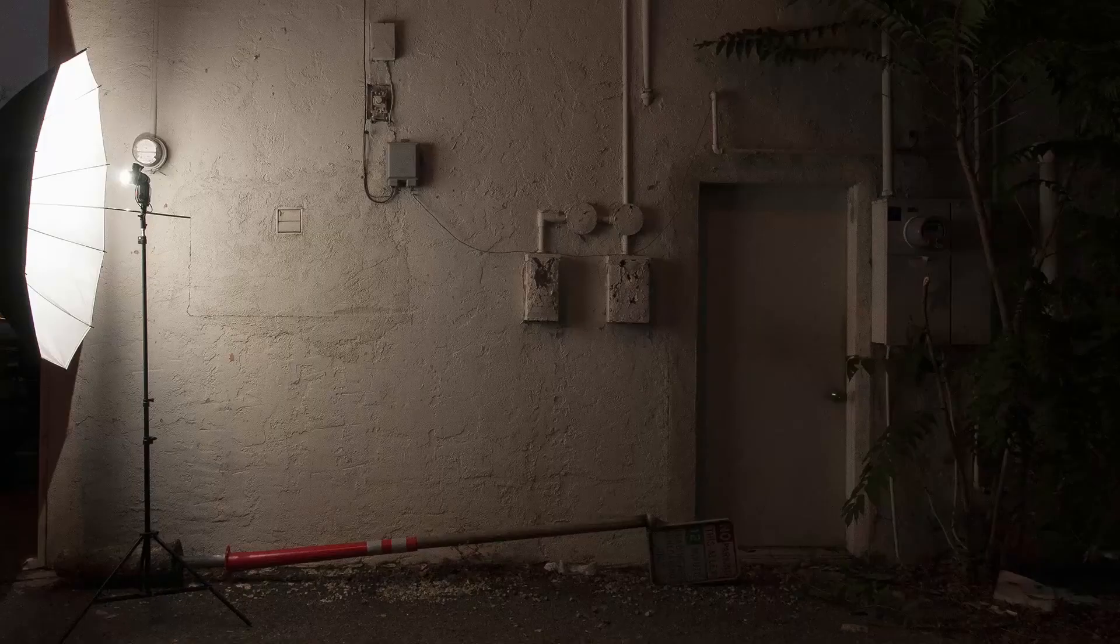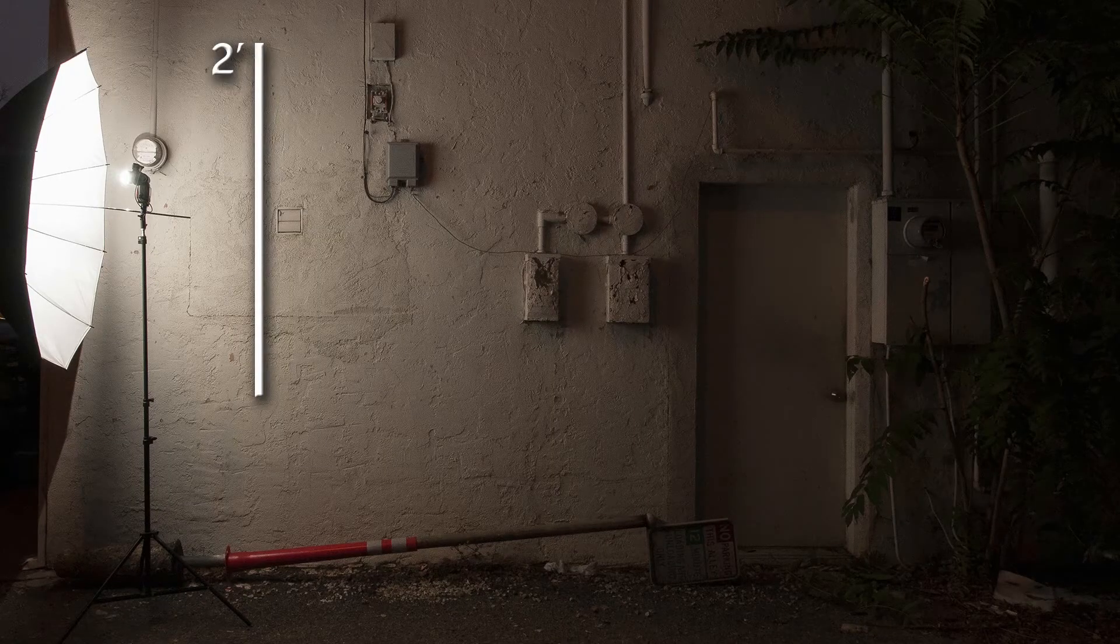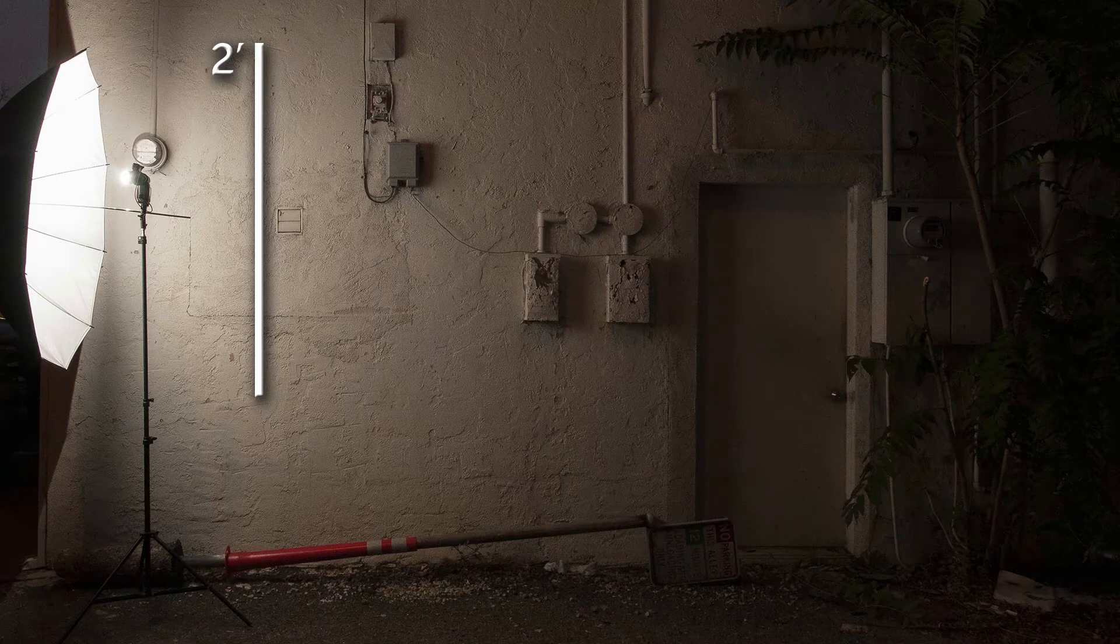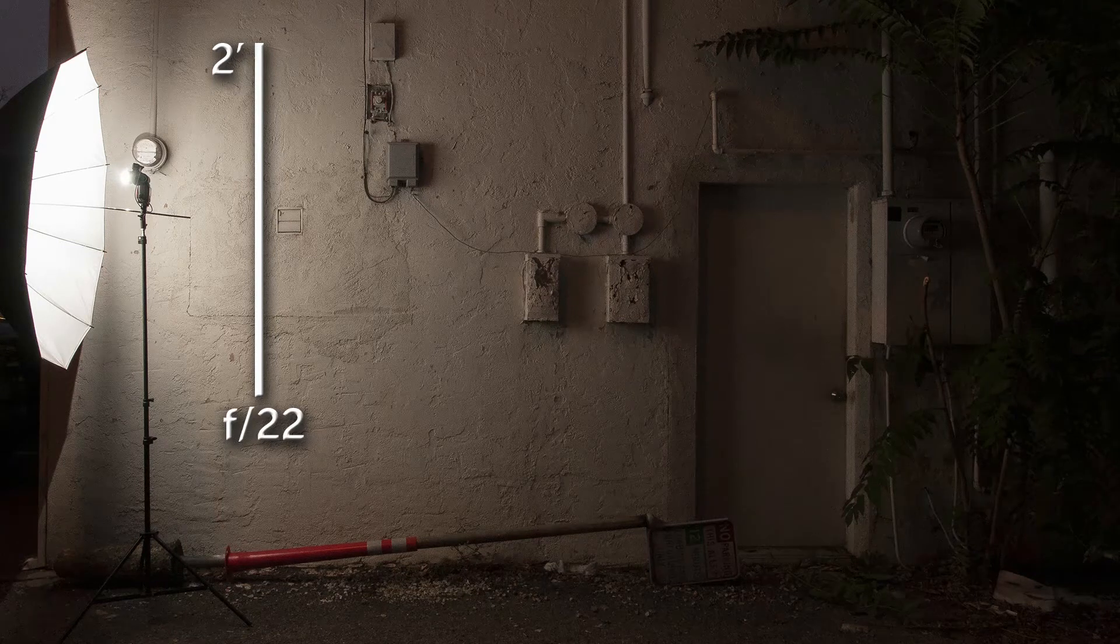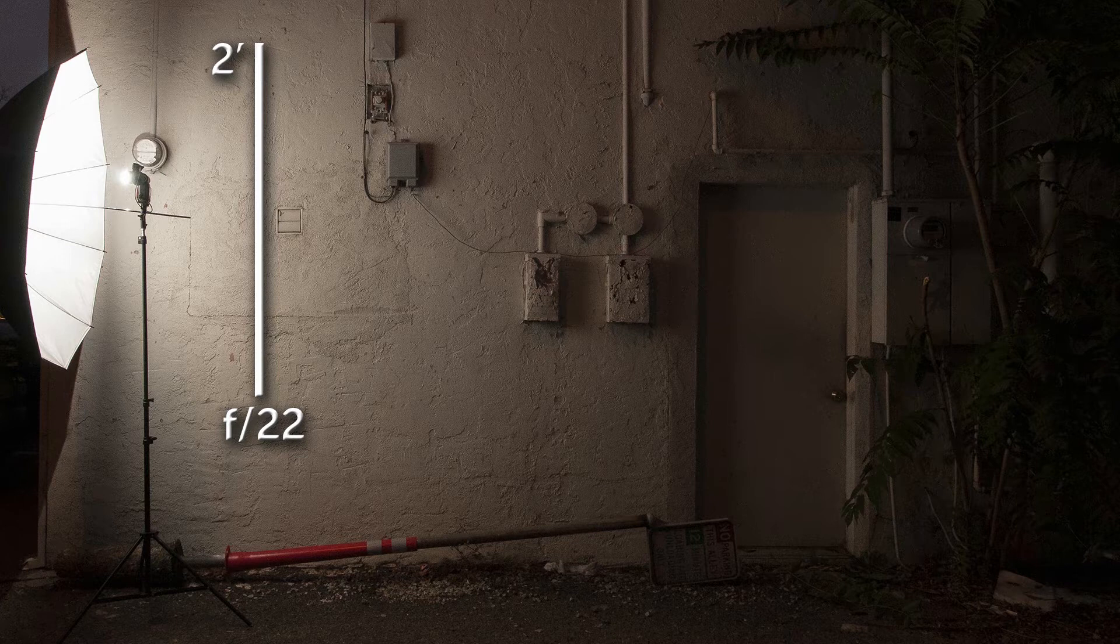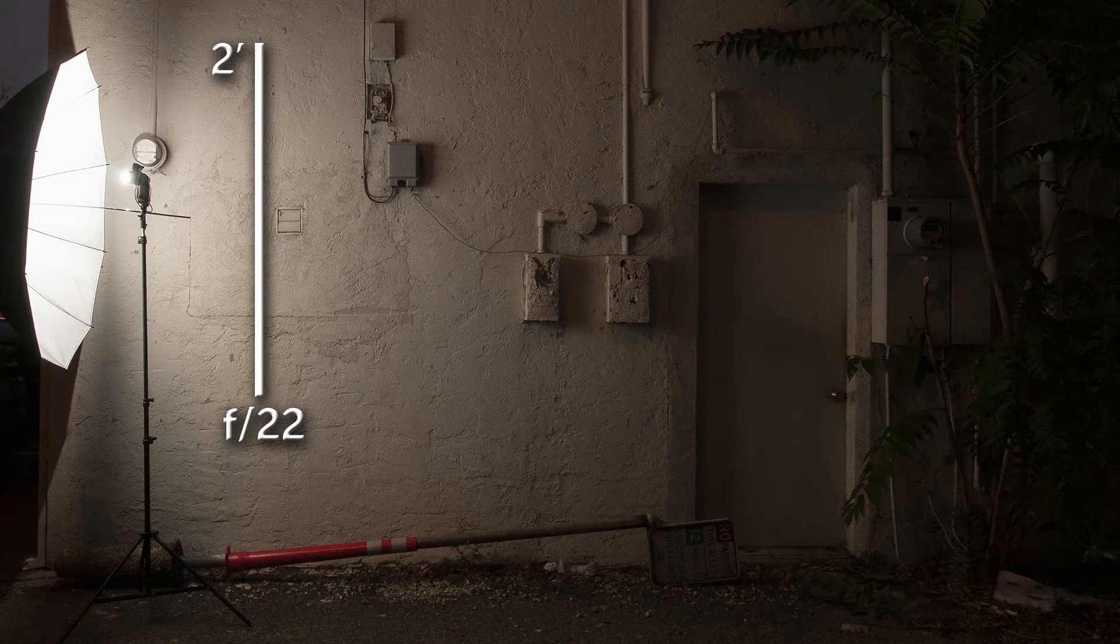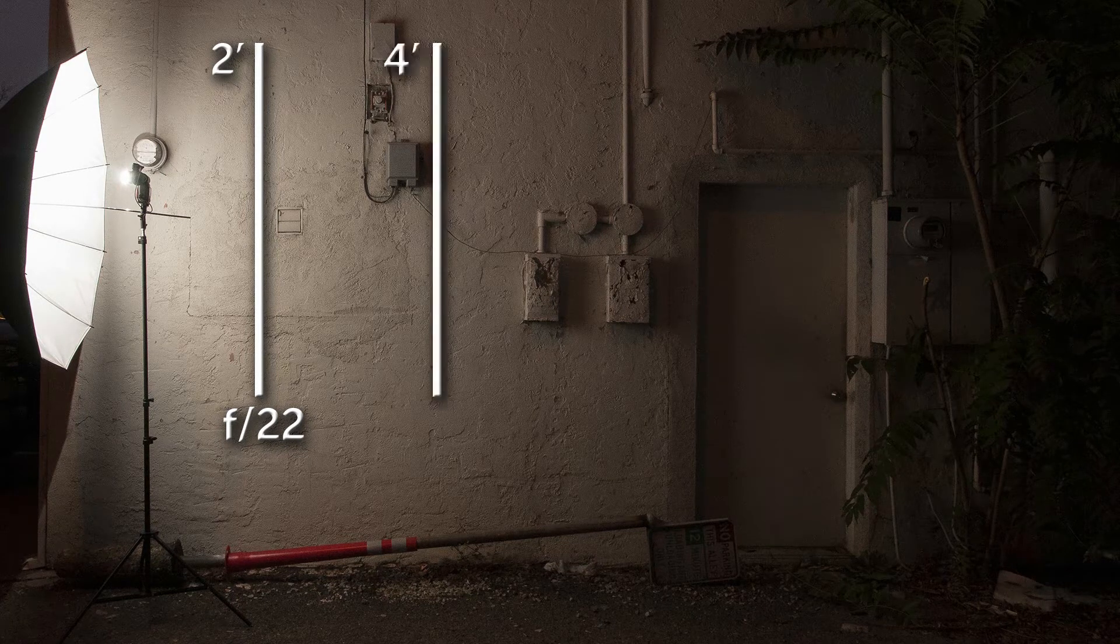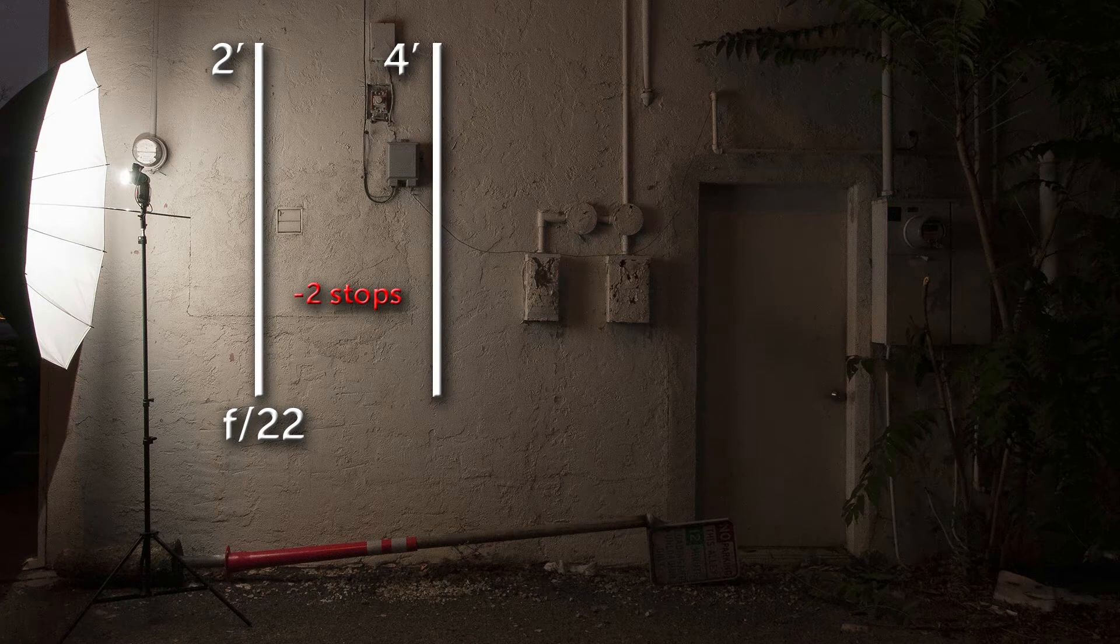I just set up one speed light to demonstrate a practical application of the inverse square law. If I were to meter two feet away from my light source, it would require my camera to be set at f22 in order to be properly exposed at that distance. If I doubled the distance to four feet, I would lose two stops of my light. My camera would now need to be at f11 to be properly exposed.